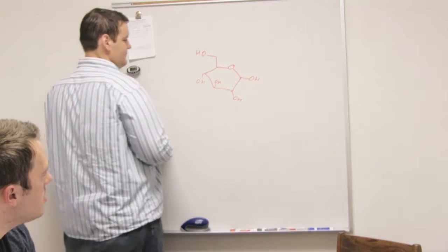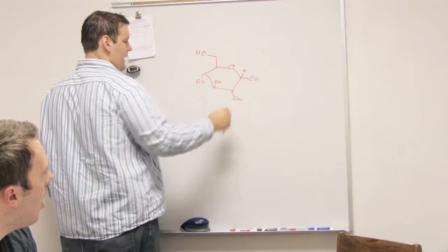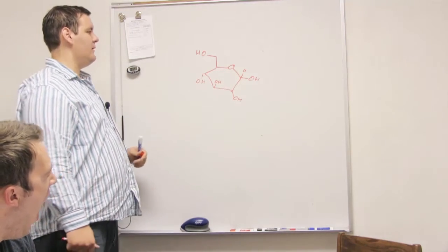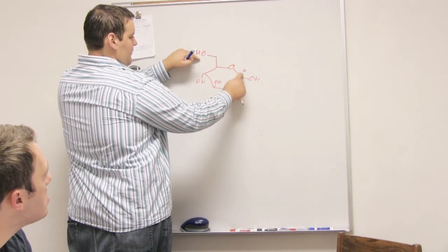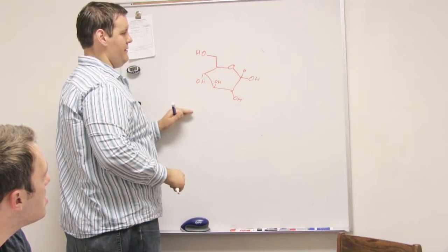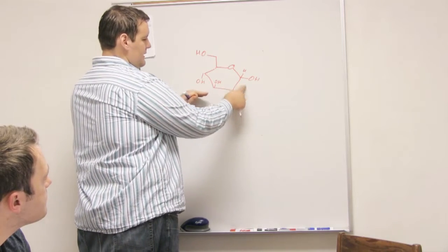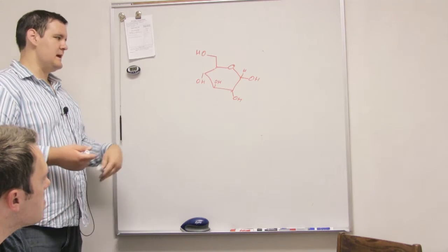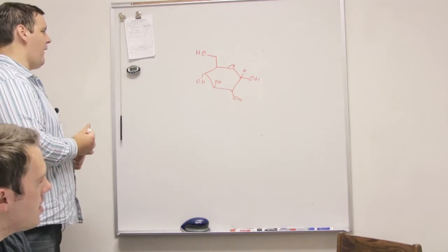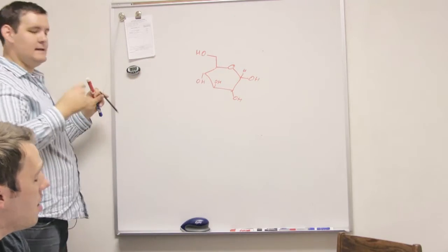Alpha is where the OH is down, and beta is where it's up. Technically, alpha is when the OH is opposite to the CH2OH, and beta is when it's cis to it. So if we had an L sugar and the CH2OH was down, then beta would be the OH down. But since we only really deal with D sugars, up is beta and down is alpha.